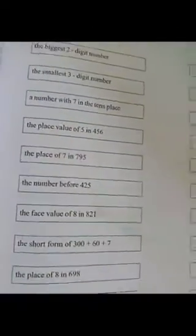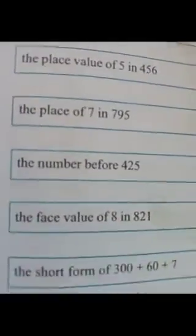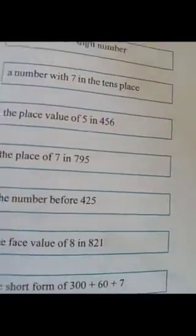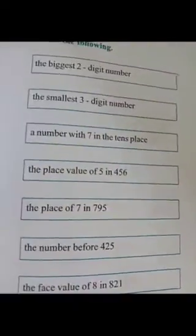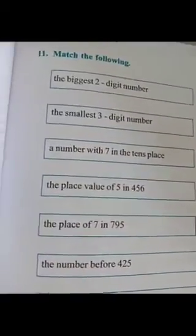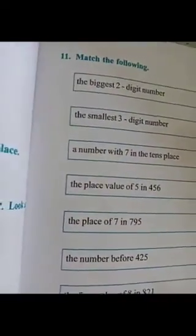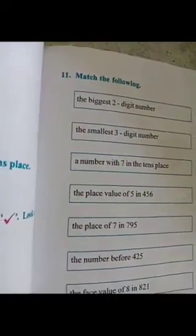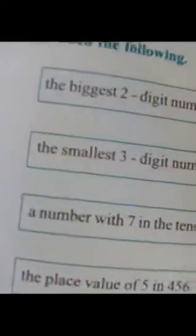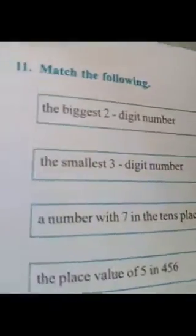Which chapter? Third chapter. What is our third chapter? Numbers with three digits. In that chapter two, part eleven, eleventh bit only — see children, eleventh bit now.